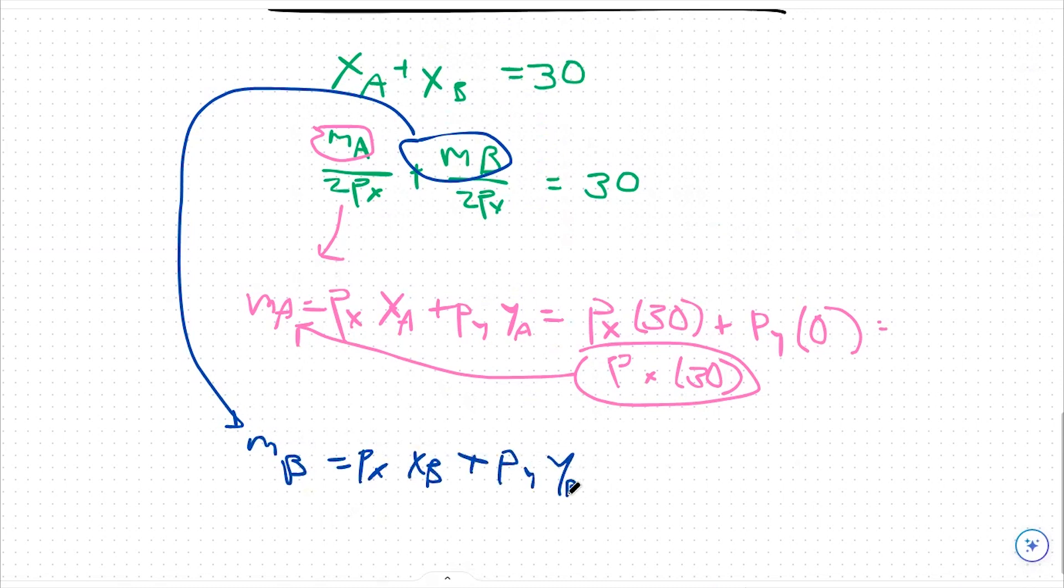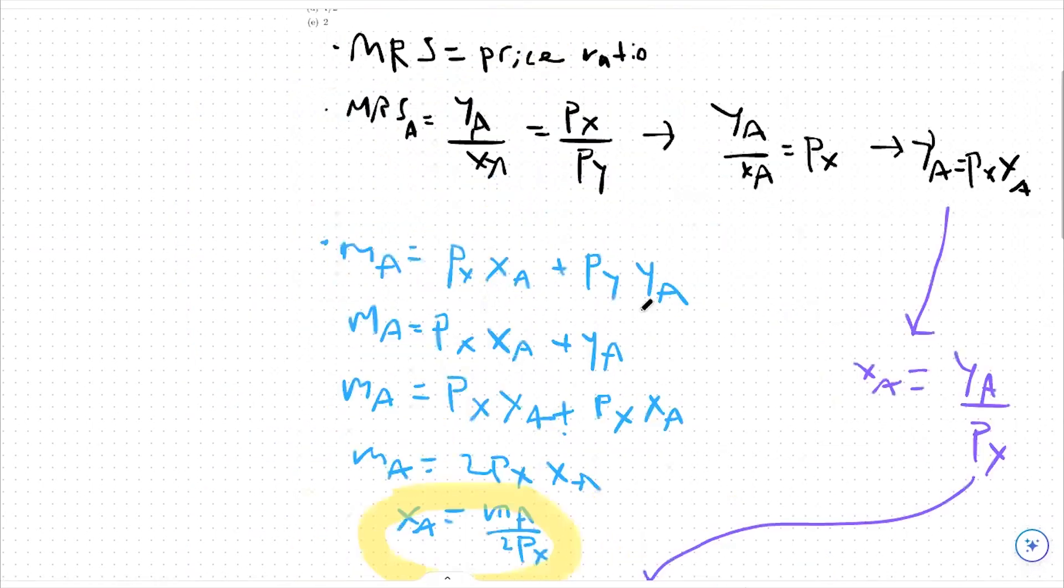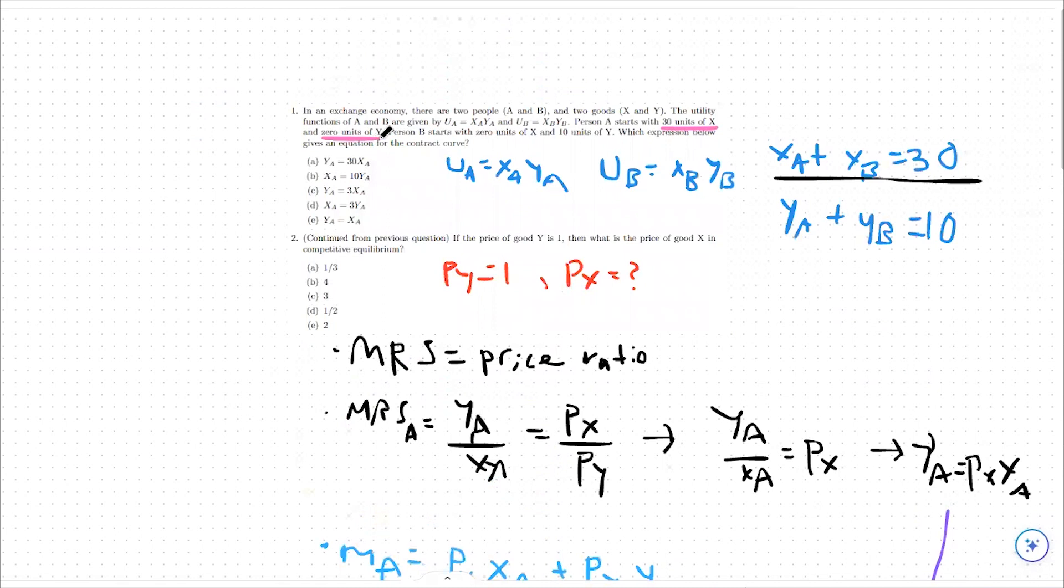We're going to plug in my endowment for person B, which was zero comma 10. We had zero units of good x and 10 units of good y.